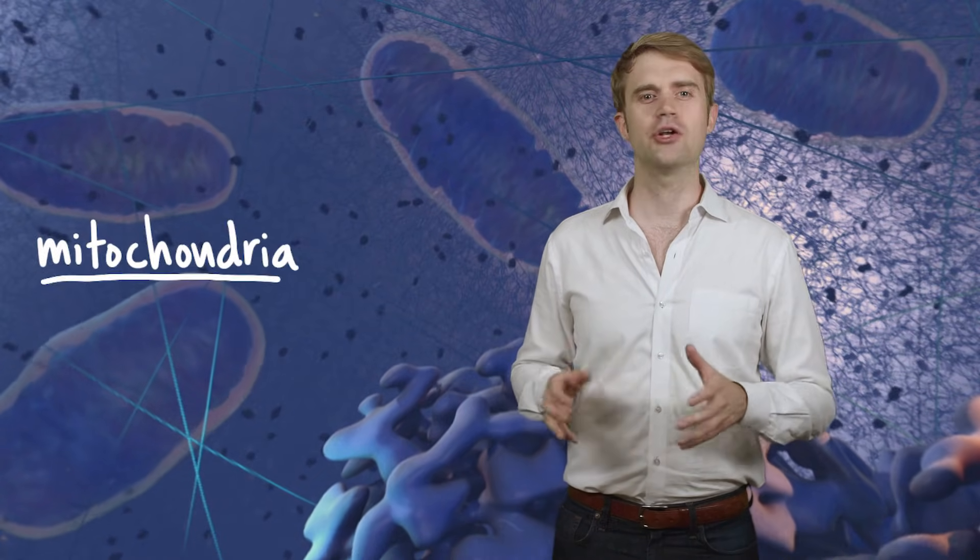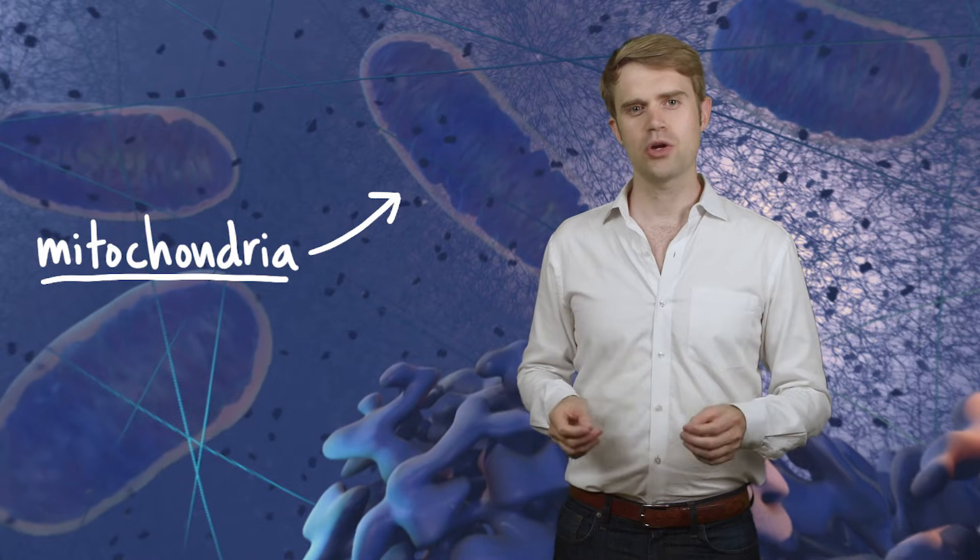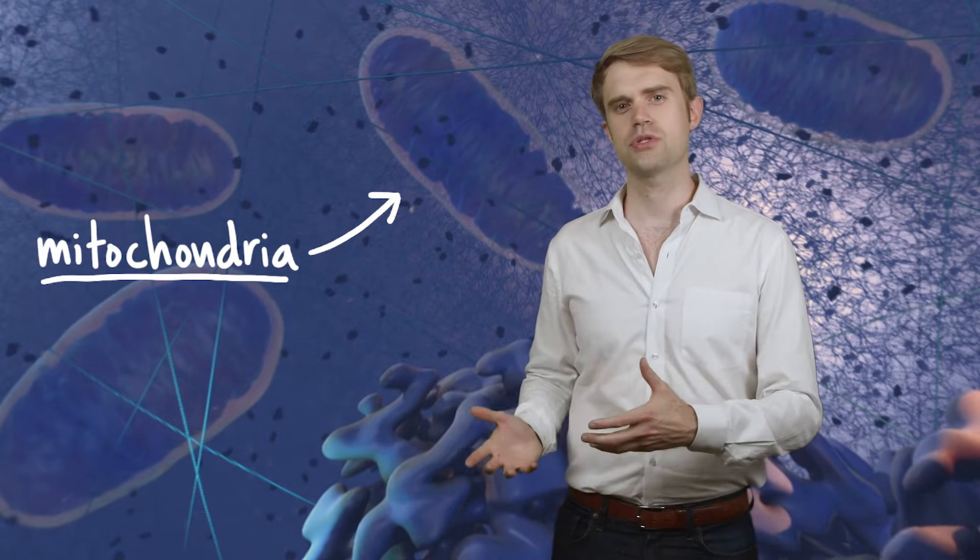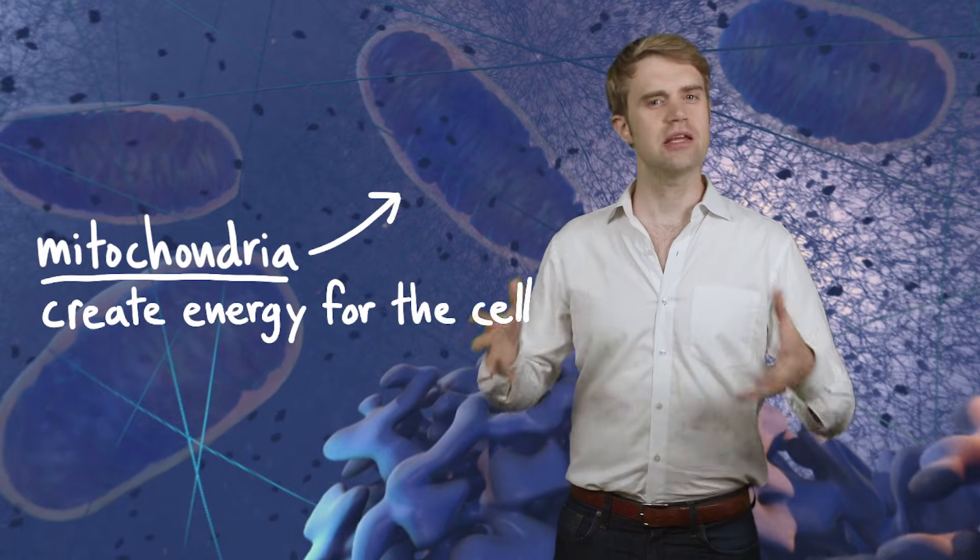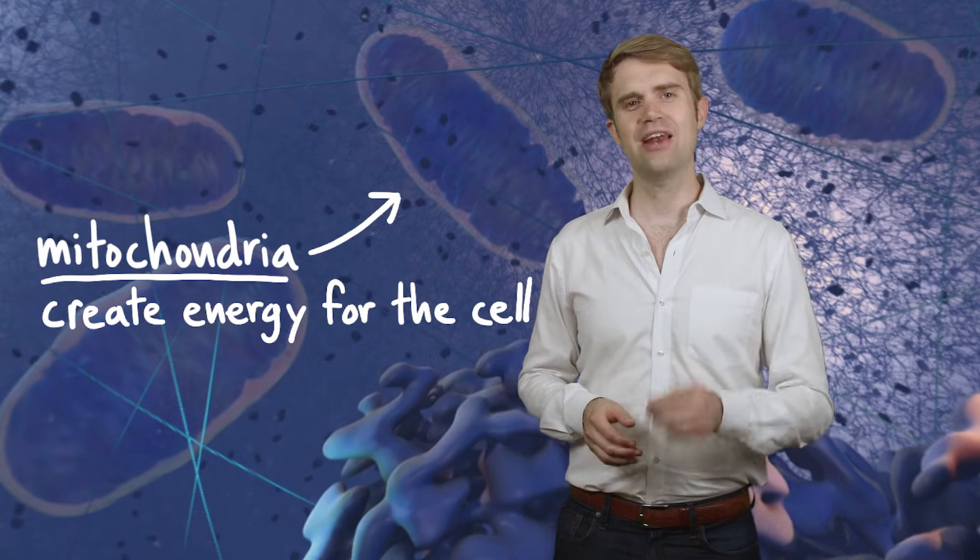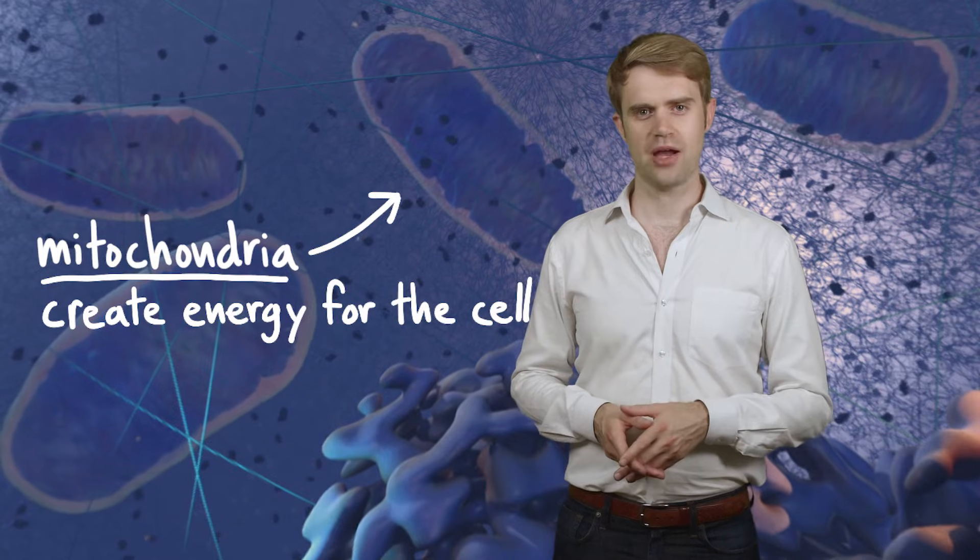You'll also see some really large oval-shaped structures towards the top of the cell. These are organelles called mitochondria. The mitochondria are often known as the powerhouses or the power plants of the cell, and their main job is to take in food and create energy the cell needs to survive.